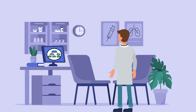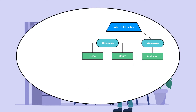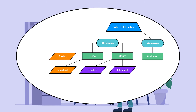With this, we can add the short-term feeding tubes to the flow chart. When a tube is inserted through the nose or mouth, it can be gastric or intestinal. Then it is named by a combination of the place it is inserted with the location where it ends.